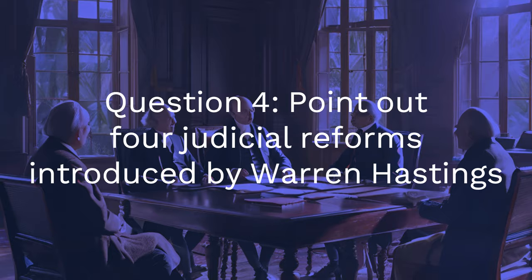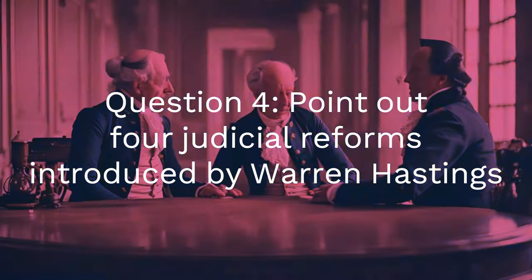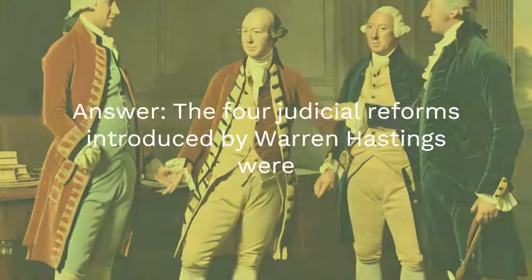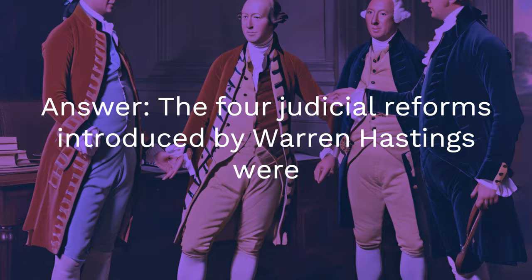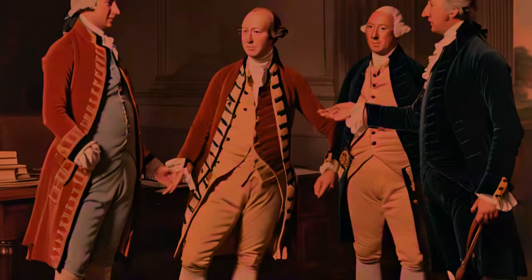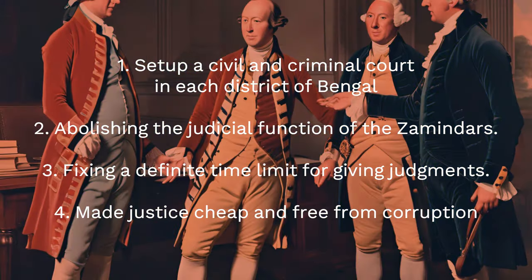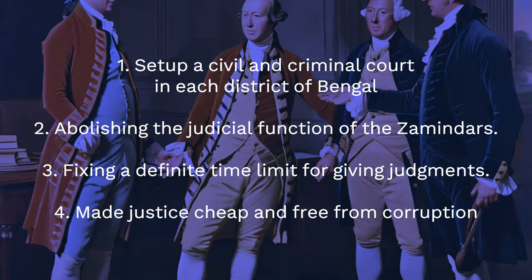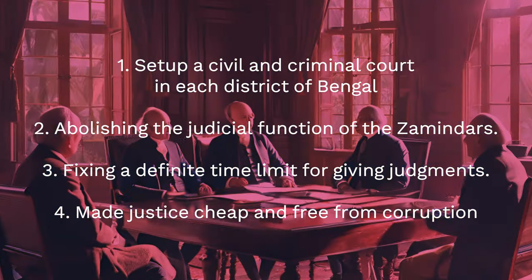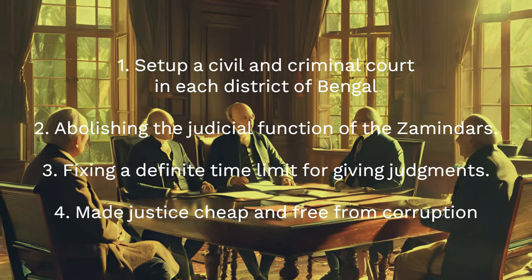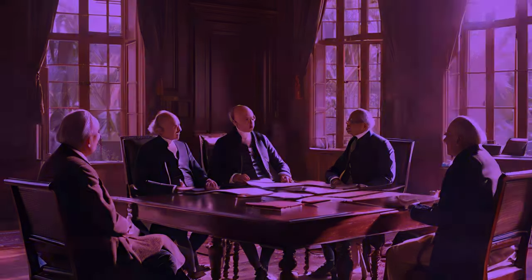Question 4: Point out four judicial reforms introduced by Warren Hastings. Answer: The four judicial reforms introduced by Warren Hastings were: one, set up a civil and criminal court in each district of Bengal; two, abolishing the judicial function of the zamindars; three, fixing a definite time limit for giving judgments; four, made justice cheap and free from corruption.